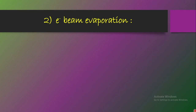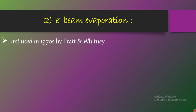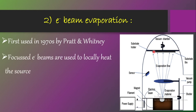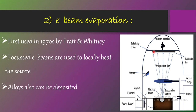In electron beam evaporation, we use an electron beam to heat the target material. It was first used during the 1970s by Pratt and Whitney. A focused electron beam is used to locally heat the source, and it can evaporate even high melting point materials — overcoming the limitation of resistive heating. The energy in the electron beam is transferred to the target material, causing evaporation and finally thin film formation. Another advantage is that alloys can also be deposited without dissociation of their constituent elements.